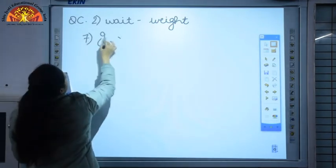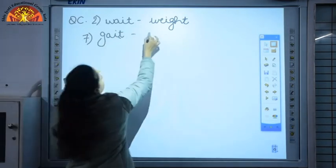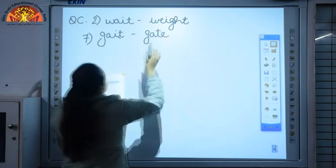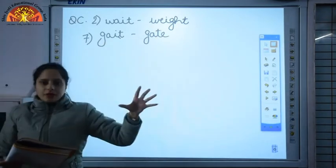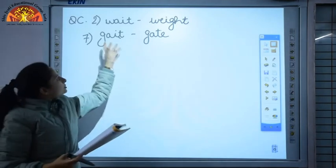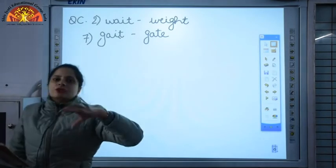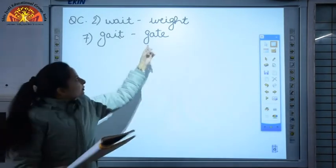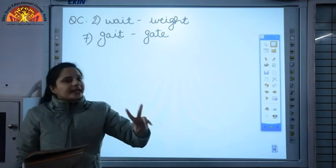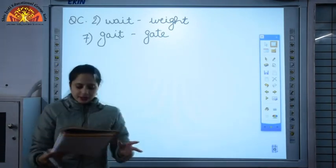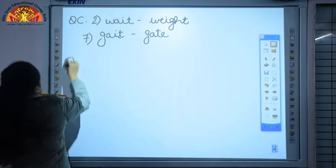Seventh one I'll discuss with you, it's gait and gate. Over here, this gait means it's a manner of walking, this gait refers to the manner of how do you walk. And this gate refers to your main door gate or your doors. So these two words have the same sound but the spelling and the meaning different.